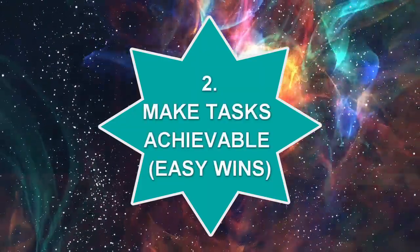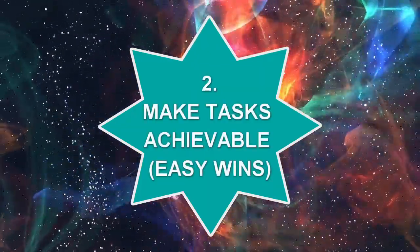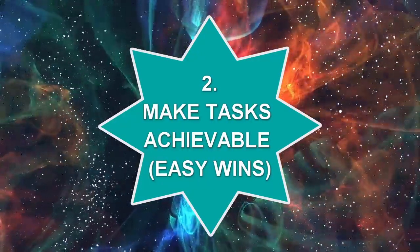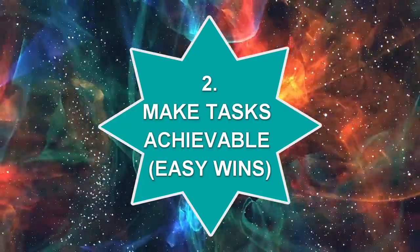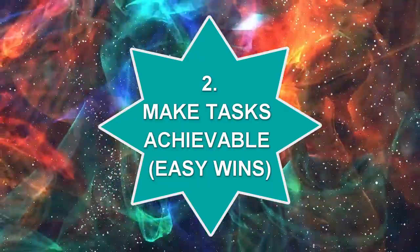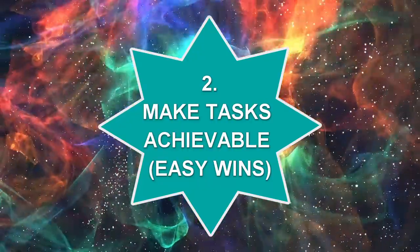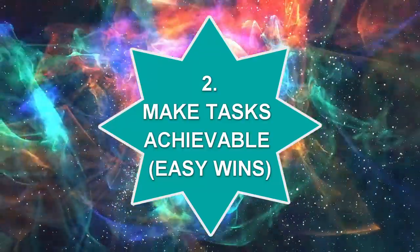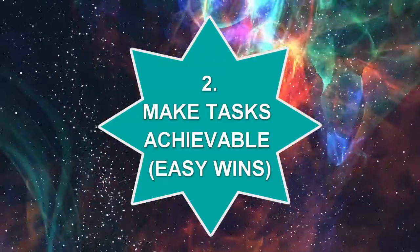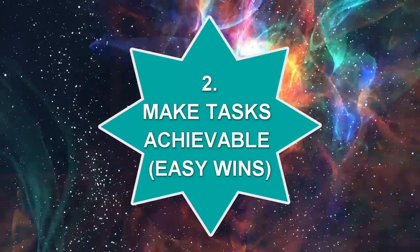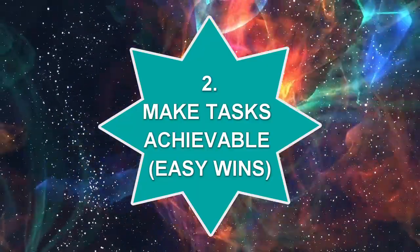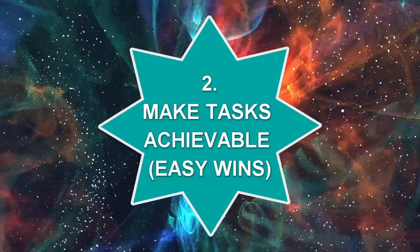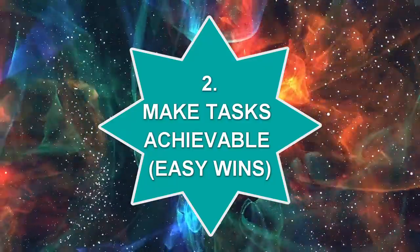Strategy 2: Make Tasks Achievable — Easy Wins. Keep each sub-task small enough to be completed within an hour or so, and make time for short breaks in between. Every item you get done helps build motivation and foster a sense of accomplishment — a great way to keep the ball rolling.